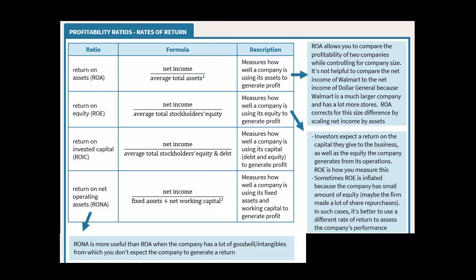I'll make another video where we decompose ROA and break it into asset turnover and profit margin. We'll also talk about return on equity, and there's a three-step and a five-step DuPont analysis decomposition we'll do. But return on equity is just taking the company's profit and dividing it by average stockholders' equity.